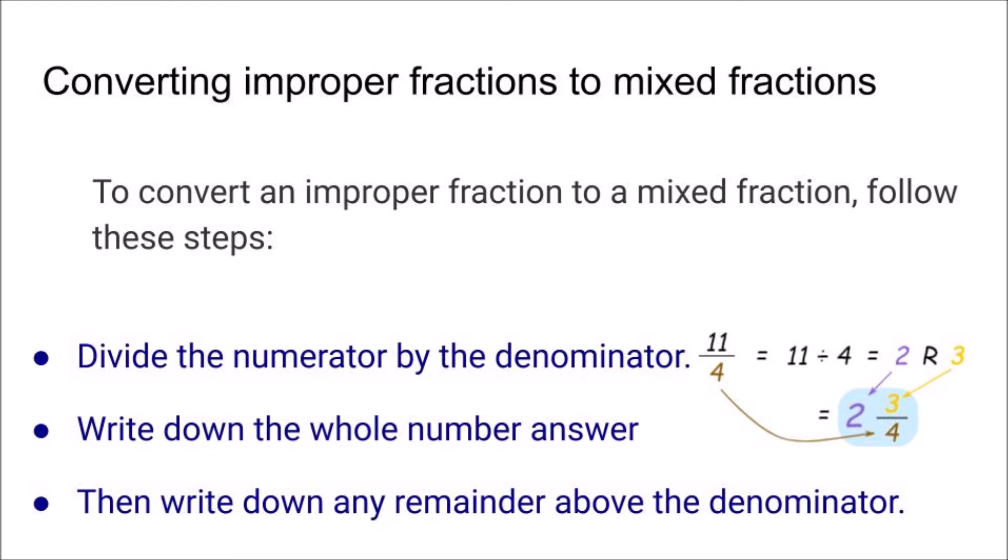Let's take an example: 11 by 4. First, a fraction is termed as improper when the numerator is equal to or bigger than the denominator. So now we are going to divide 11 by 4. The quotient 2 is written as the whole number answer, and the remainder 3 is written above the denominator.